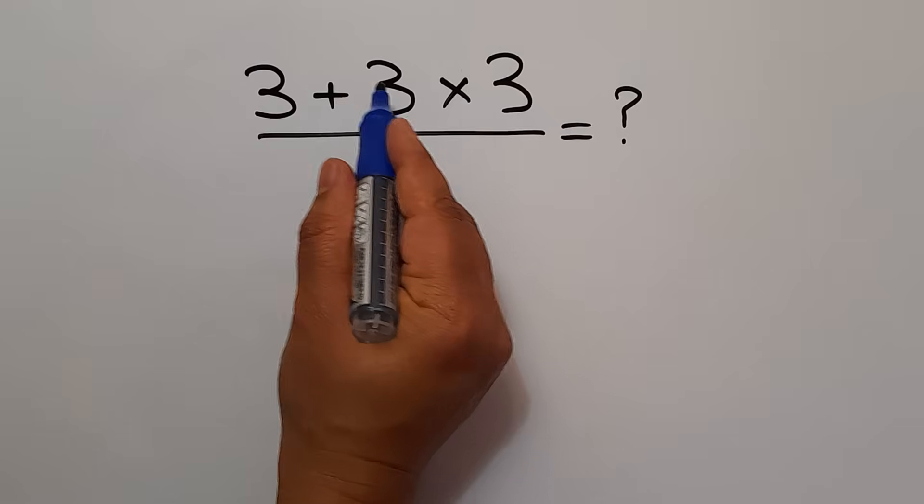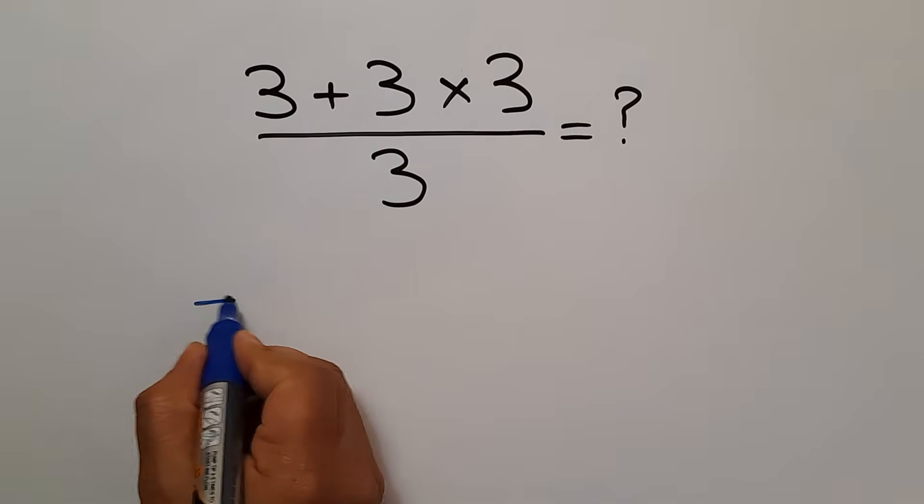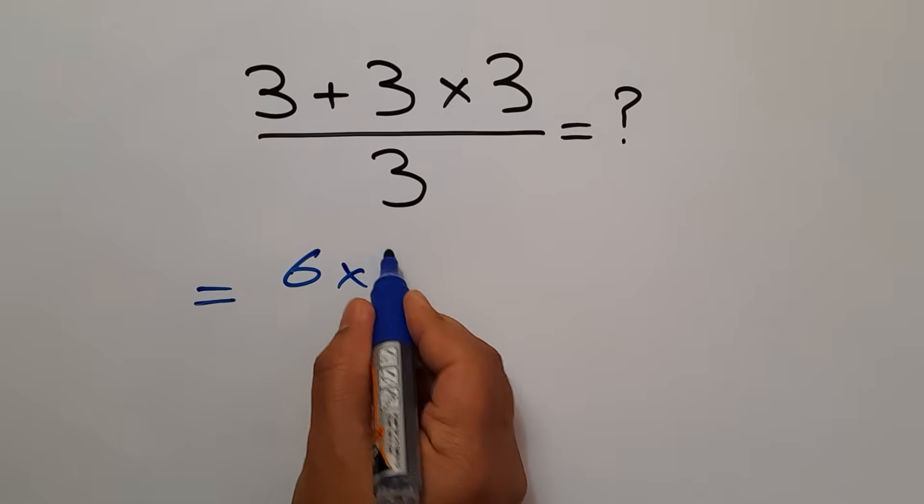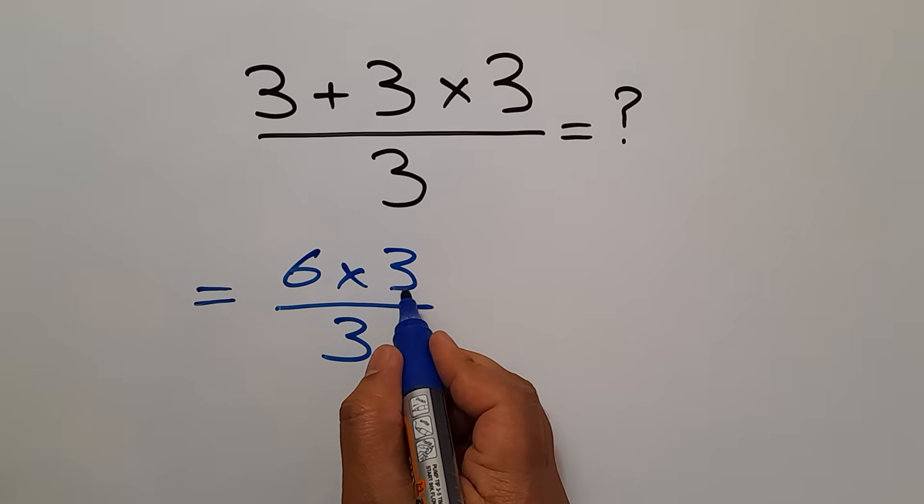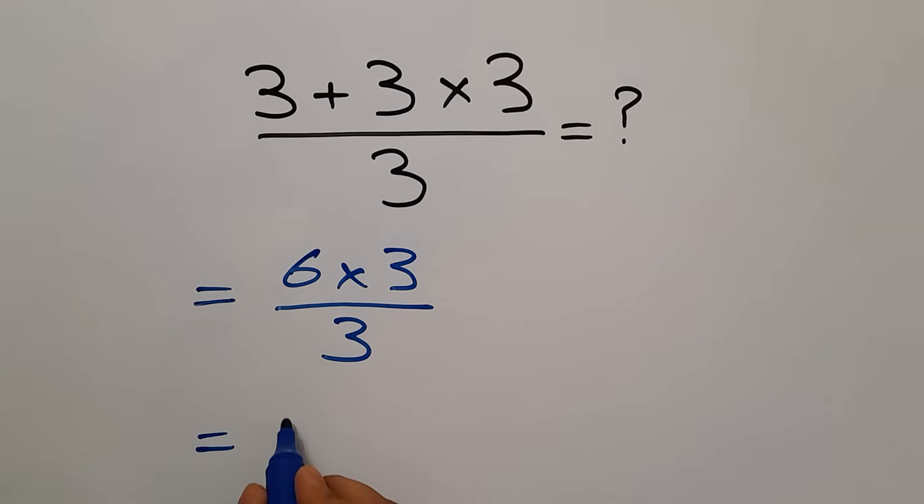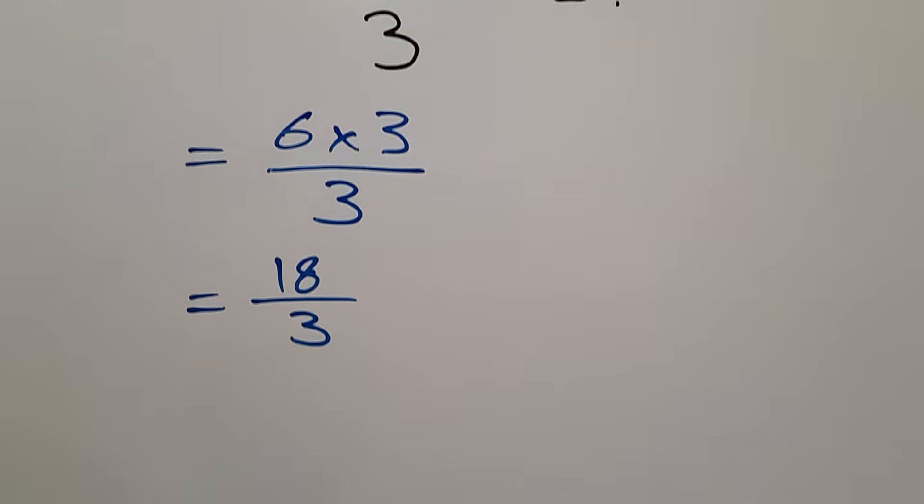3 plus 3 gives us 6. So 6 times 3 then divided by 3. 6 times 3 equals 18. So 18 divided by 3, and 18 divided by 3 is equal to 6.